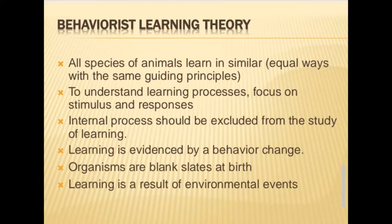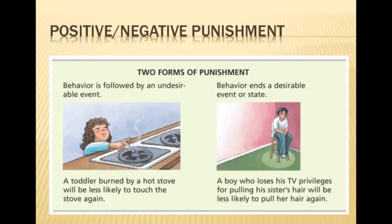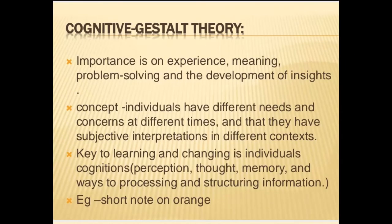Operant conditioning is divided into two parts: number one, reinforcement, and number two, punishment. In reinforcement, there are positive and negative forms. In positive reinforcement, anything that increases the likelihood of a behavior by following it with a rewarding consequence.